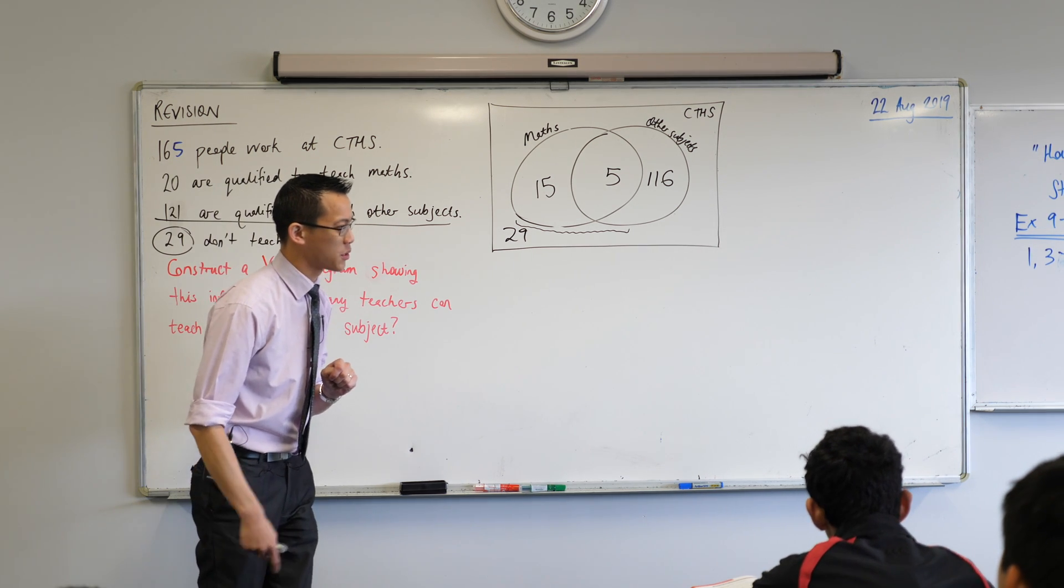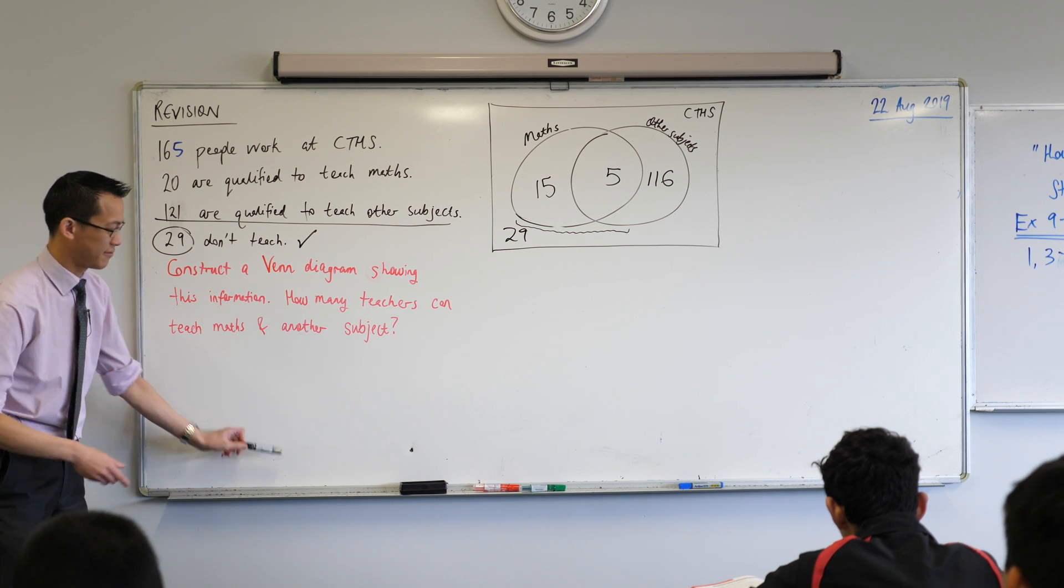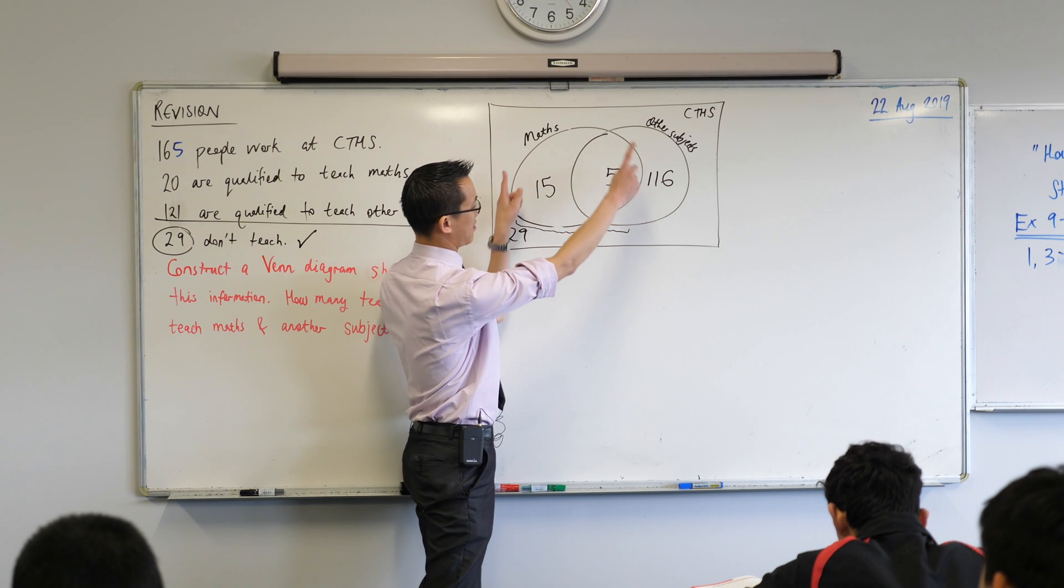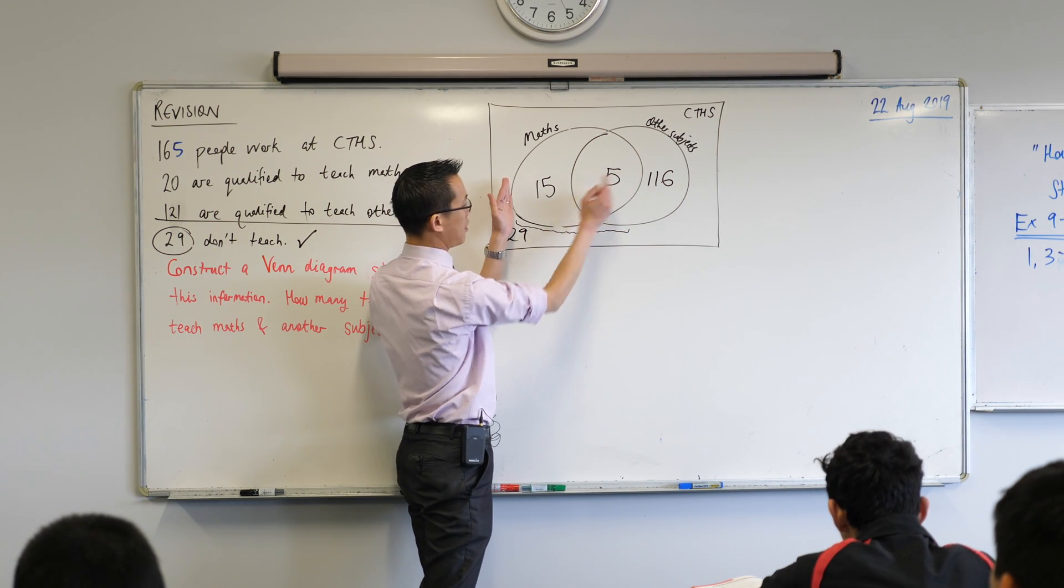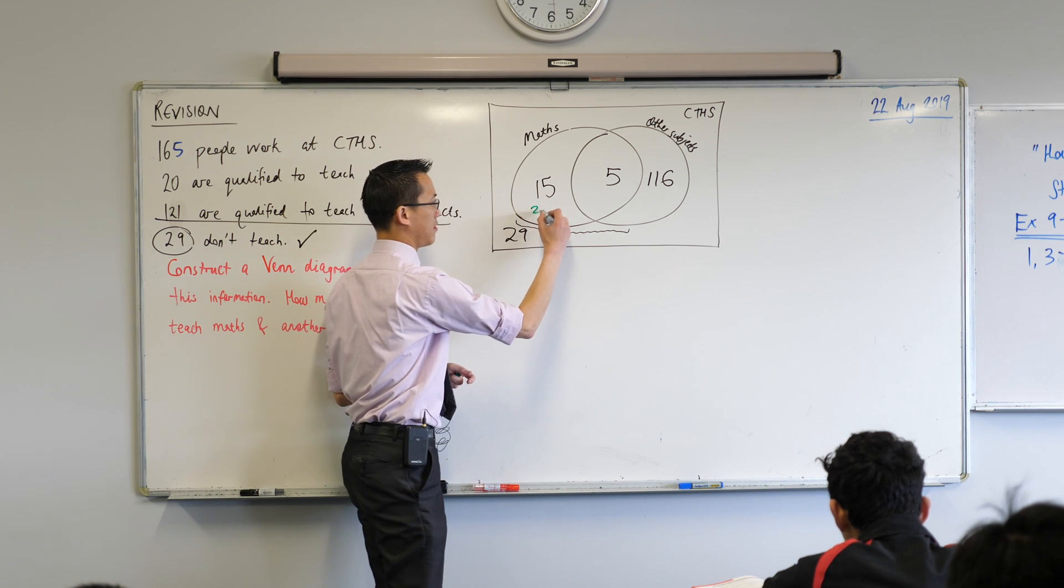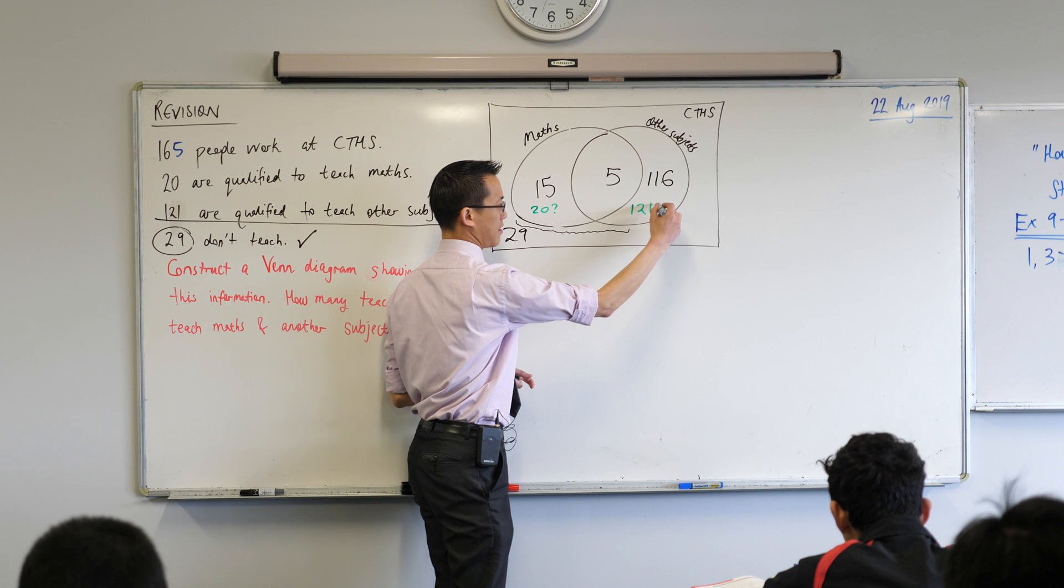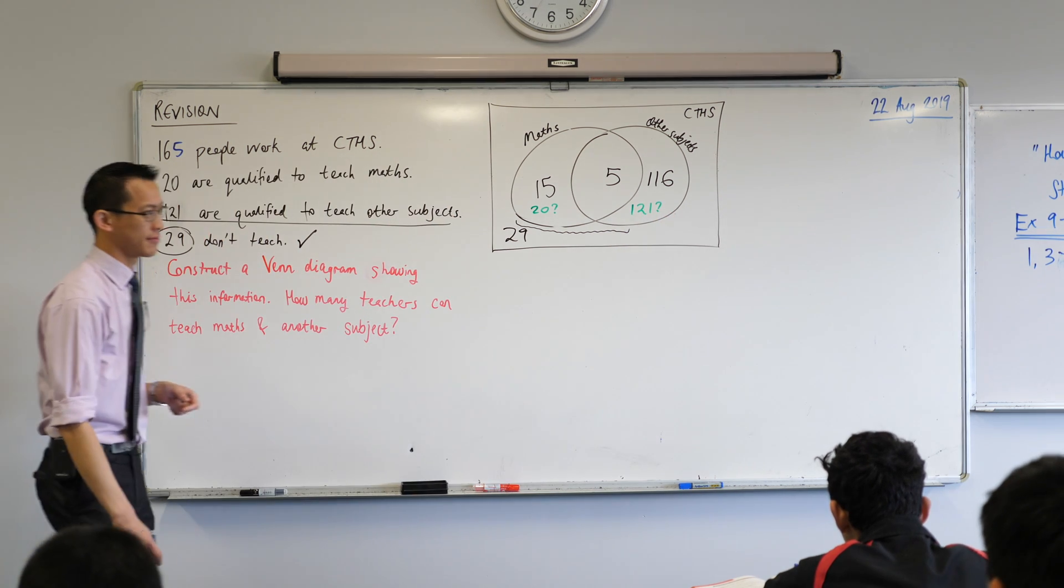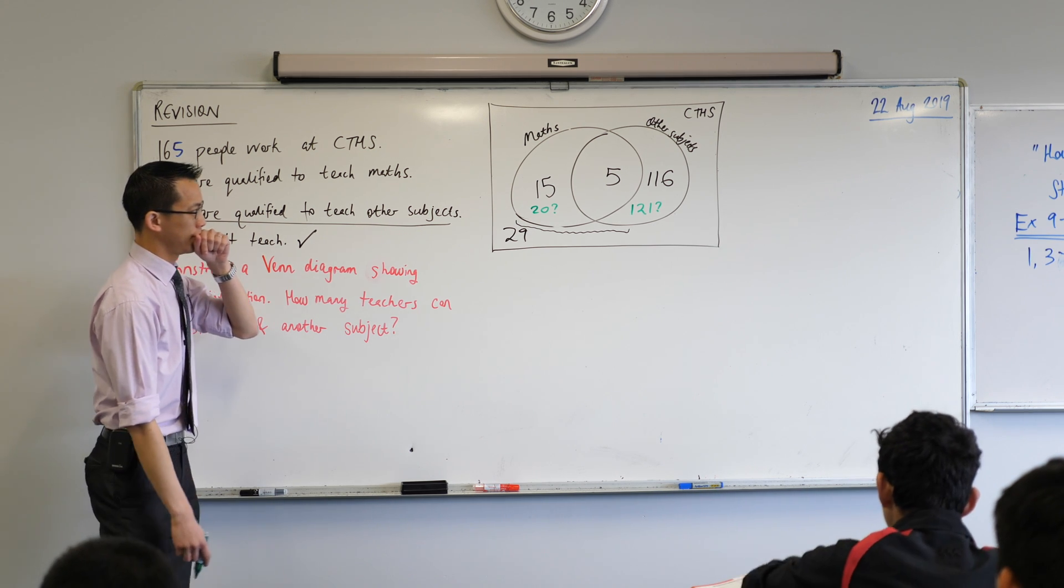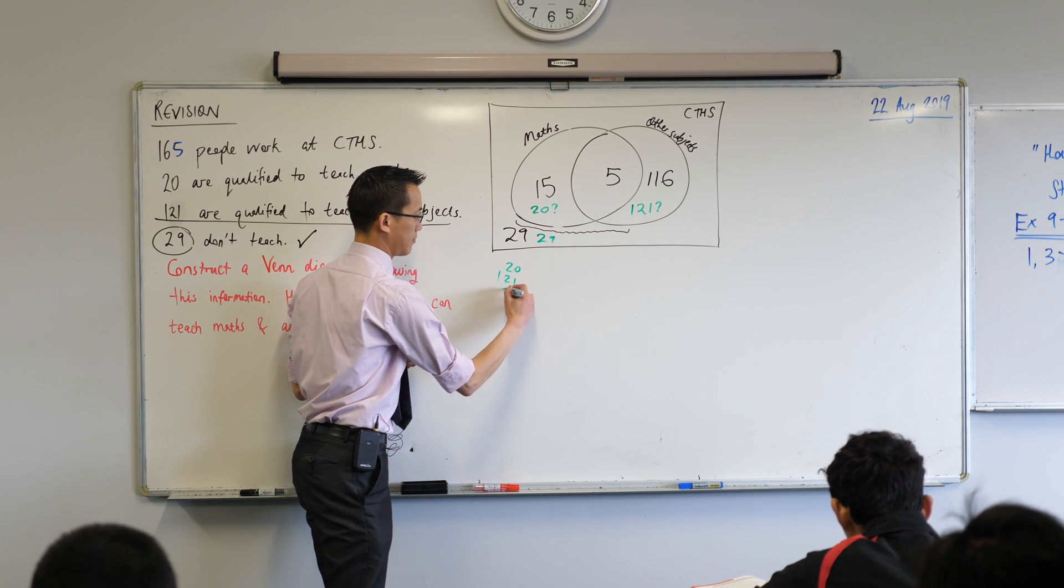Now Louise, you suggested a different way of going through this. What did you do instead? So first I just did the two circles and then I wrote 20 on the left side. Here? Yes. And 121 on the right side. Here? Yeah. Just so I know what I'm starting with. And then the 29 obviously outside.